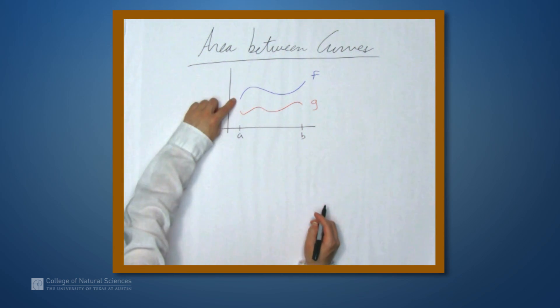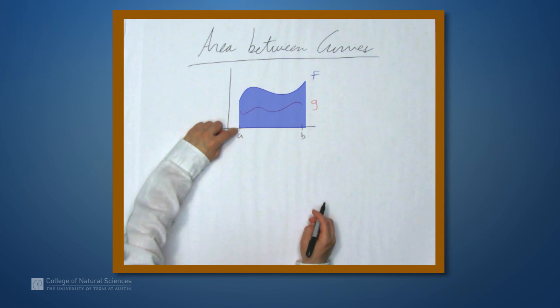Well, to find that area, we can find the area between f and the x-axis, which we just do by integrating. Find the area between g and the x-axis, and then subtract the area under g from the area under f.